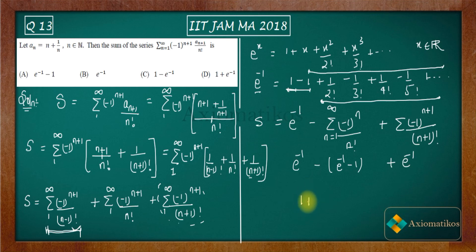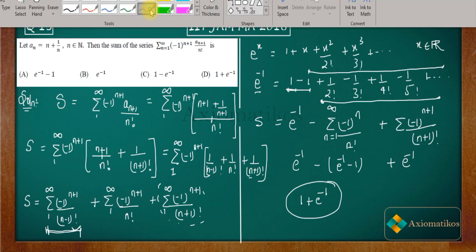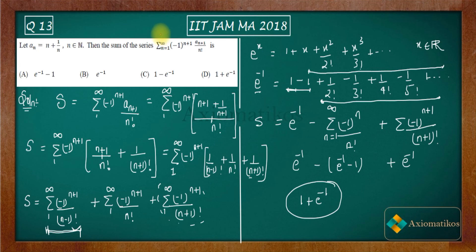So finally you are getting 1 plus e^(-1) as your answer. This is how you solve this question. If you are doing it yourself, you can solve it in just about two minutes. So finally, D is your correct answer. Thank you.